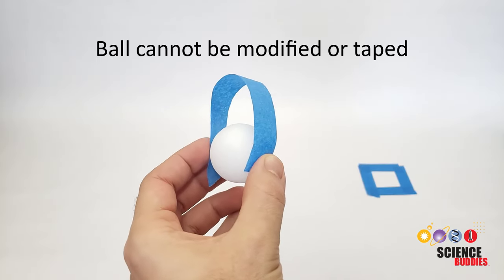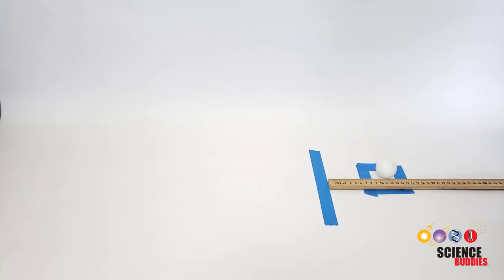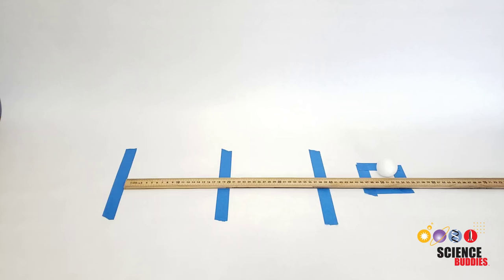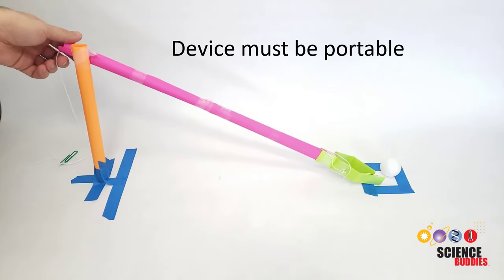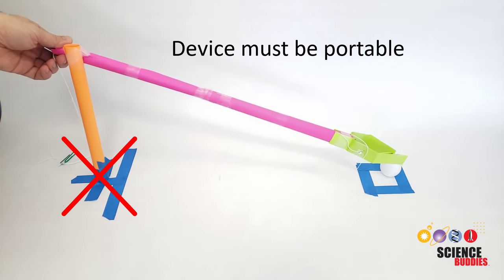The ball cannot be modified in any way or have anything taped to it. The ball must start a minimum of 10 centimeters from the starting line. After that, you can increase the distance for subsequent trials as you try for higher scores. Your device must be portable. It cannot be taped to the ground or another object like a piece of furniture.